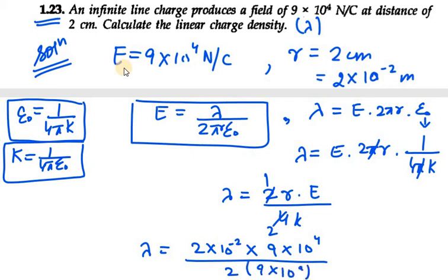So 9 and 9 cancel out, 2 and 2 cancel out, so we are left with only powers of 10. When we solve this we get 10^2 at numerator and 10^9 at denominator.